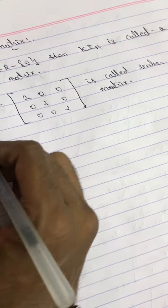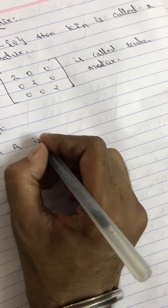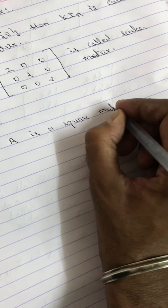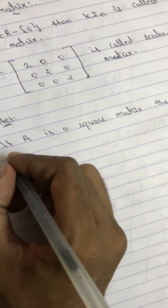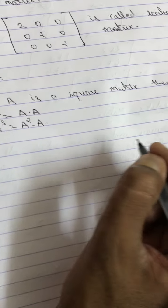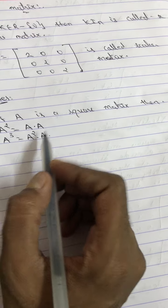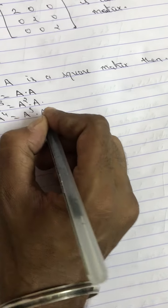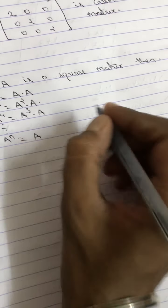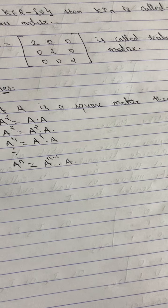Notes: if A is a square matrix, then A² means A × A — do not square individual elements. Similarly, A³ = A² × A. In general, A^n = A^(n-1) × A, where n is always greater than 1. So A⁴ = A³ × A, and so on. Thank you.